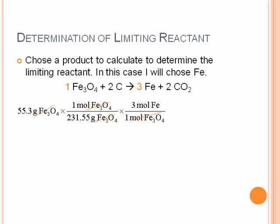To get grams, we multiply by the atomic weight of iron from the periodic table, which is 55.85 grams of iron per one mole of iron. Running that through the calculator, we get 40 grams of iron. But we're not done yet — we need to do the same calculation with the carbon reactant.